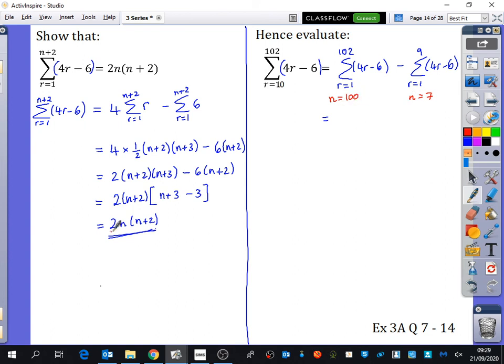So what we're going to do now is substitute these values into this, so we would have 2 multiplied by 100 multiplied by 102 minus 2 multiplied by 7 multiplied by 9. Don't know why I've suddenly switched to a red pen but I have. So that is 200 times 102 minus 2 times 7 times 9.